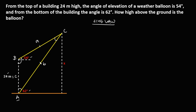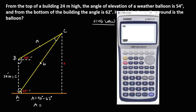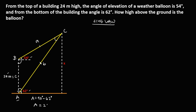To solve for angle A: since this is a right triangle and a right triangle is 90 degrees, angle A equals 90 minus 62 degrees, so angle A equals 28 degrees. To solve for angle B: since this side is 90 degrees, angle B equals 90 plus 54 degrees, so angle B equals 144 degrees.